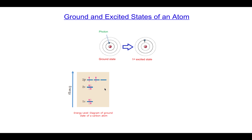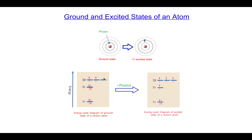We can understand this with another example. Consider the carbon atom: it has six electrons total — two in the 1s orbital of the first shell, two in the 2s orbital, and two in the 2p orbitals of the second shell. This is the ground state of carbon. When carbon absorbs a small amount of energy sufficient to promote one of the paired 2s electrons, that electron jumps up to an empty 2p orbital. The new state has one electron moved from the 2s to the 2p orbital — this state of the carbon atom is called the excited state of carbon.